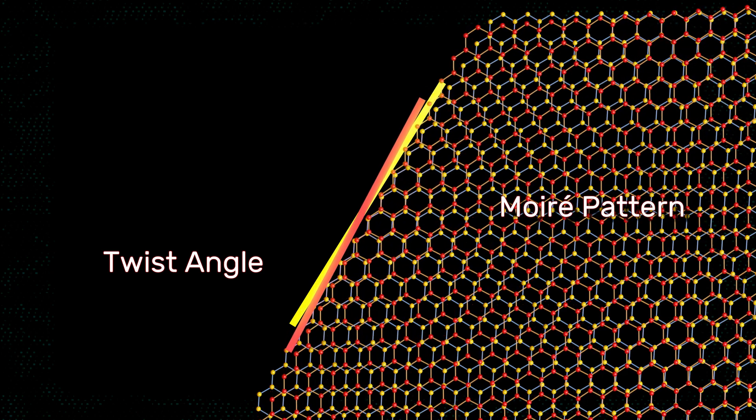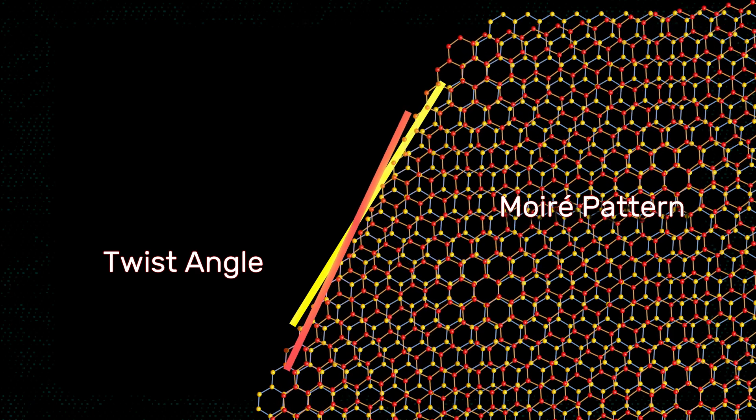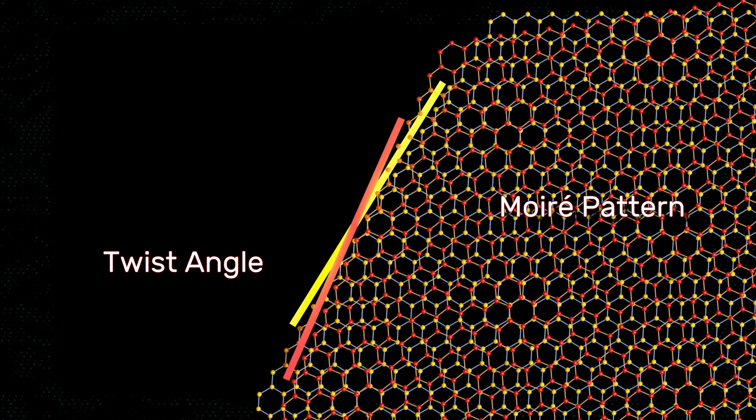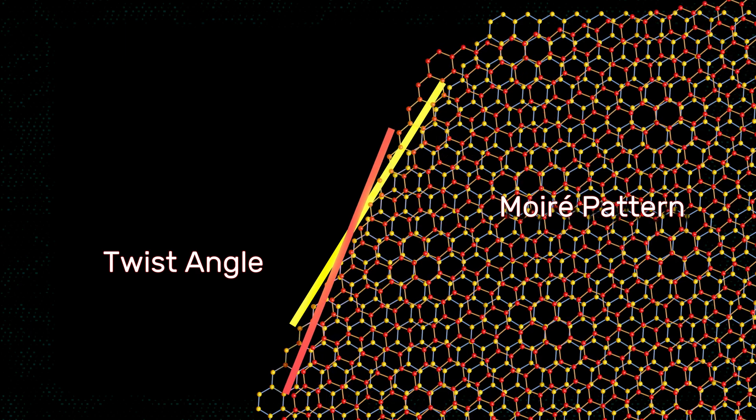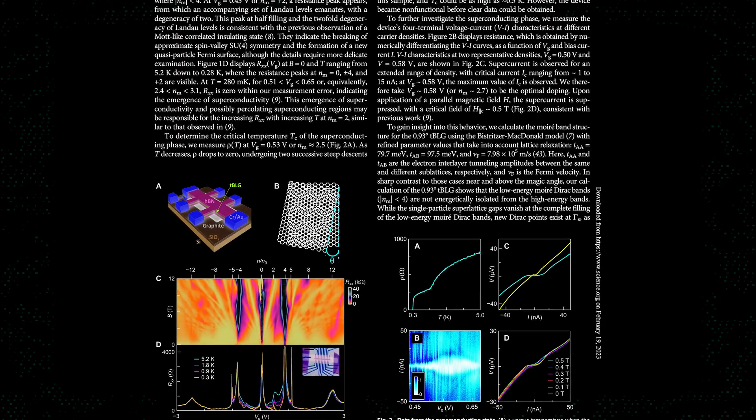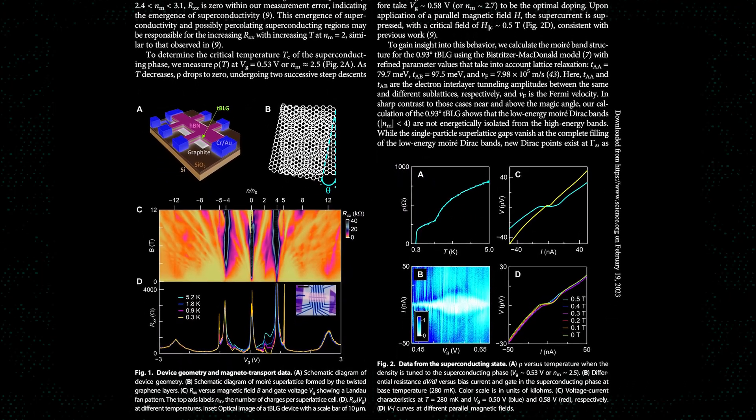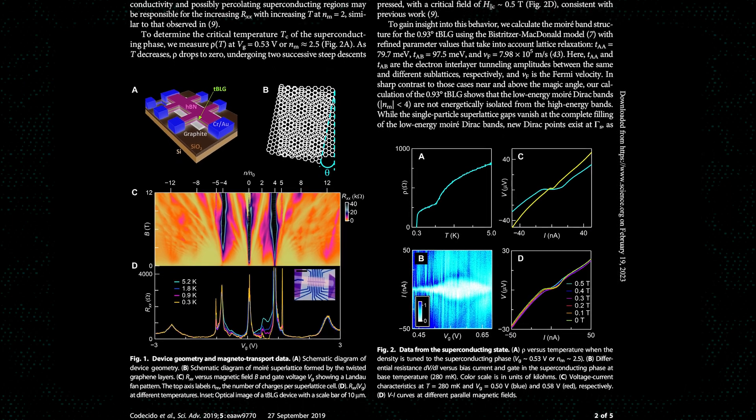The effect of moiré bands was suggested by Dr. Alan McDonald and Dr. Rafi Bistritzer in 2011. These two researchers used models to predict what happens when bilayer graphene is offset at a magic angle of 1.1 degrees. In 2018, this theory was proven by researchers at MIT. By obtaining the magic angle of 1.1 degrees, the graphene bilayer had turned into a two-dimensional superconducting surface.